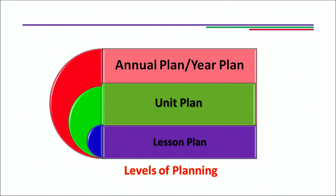Planning takes place at three different levels. I want you to look very carefully at this graphic. If you look very carefully, you will observe two things: the text is increasing in font size from down to top, and you also have color codes — blue, green and red.